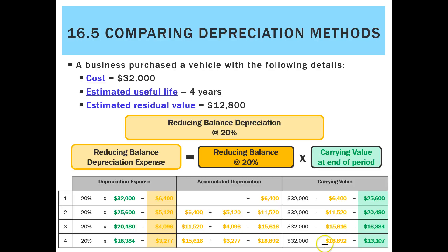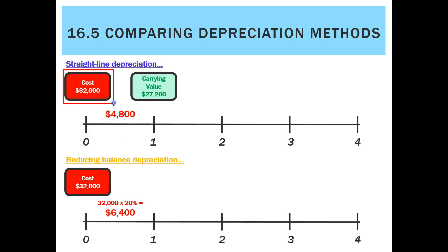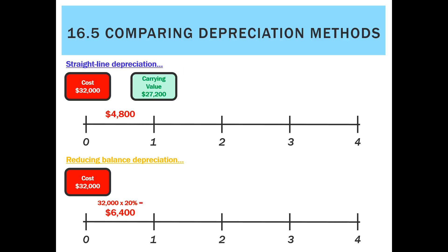Looking at both methods side by side: both started with the same cost. In year one, straight line charged $4,800 while reducing balance charged $6,400 (32,000 × 20%). The carrying value using straight line was $27,200, calculated by taking the cost and subtracting accumulated depreciation, whereas reducing balance gave a carrying value of $25,600.